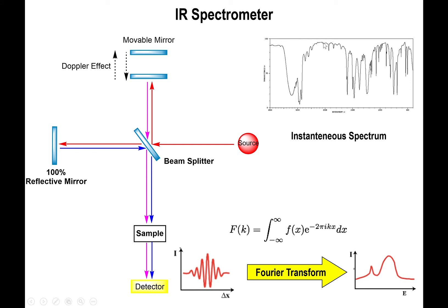Your typical infrared spectrum — one example is shown right here. This happens almost right away. The moment the data collection ends, you end up collecting this sample within seconds, really. So it's a really fast technique.